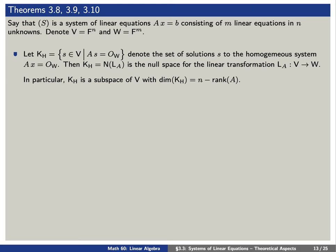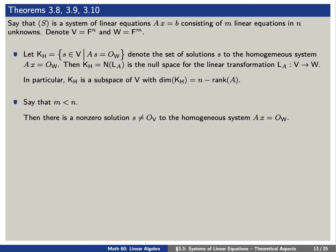Next, let's assume that M is less than N — that is, we have more variables than equations. Then there exists a non-zero solution to the homogeneous equation A times X equals the zero vector, meaning there is a vector S where not all components of S are zero.